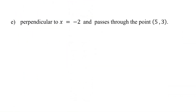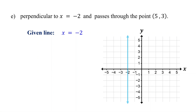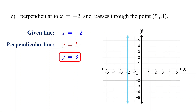What if the given line is vertical? How can we find the equation of a perpendicular line in this case? The given line is x equals negative 2. It represents a vertical line crossing the x-axis at negative 2. A perpendicular line must be horizontal, written as y equals k, where k is the y-coordinate of the given point. Here, the y-coordinate of the given point is 3, so k is 3. Therefore, the equation of the perpendicular line is y equals 3. If you graph this, the line crosses the y-axis at 3, passes through the given point (5, 3), and is perpendicular to the given line. In general, if the given line is in the form x equals a constant, the perpendicular line is y equals the y-coordinate of the given point.